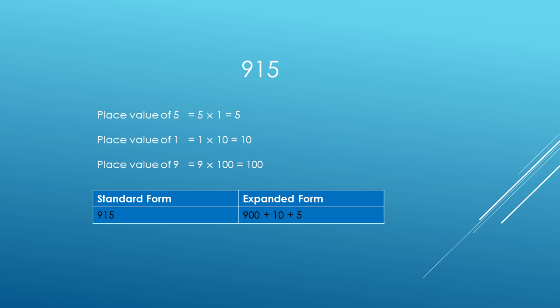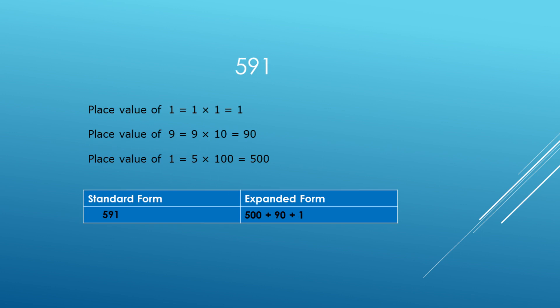Now we will consider another number. Here, 1 is in the 1's place, so the place value of 1 is 1 × 1 = 1. 9 is in the 10's place, so the place value of 9 is 90. And 5 is in the 100's place, so the place value of 5 is 500. So the expanded form of 591 is 500 + 90 + 1.